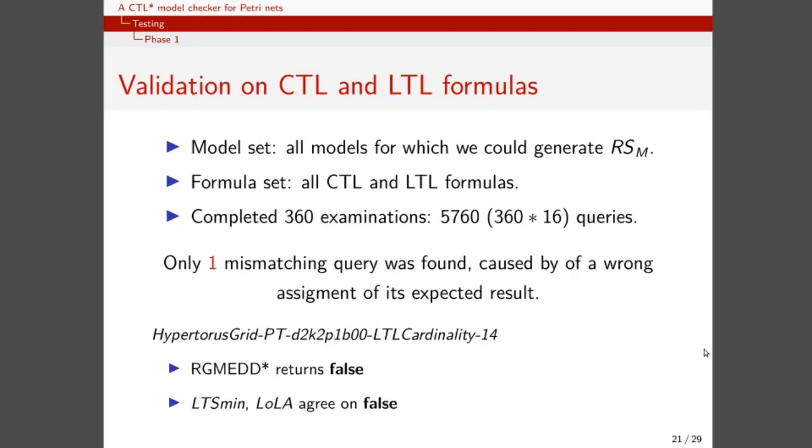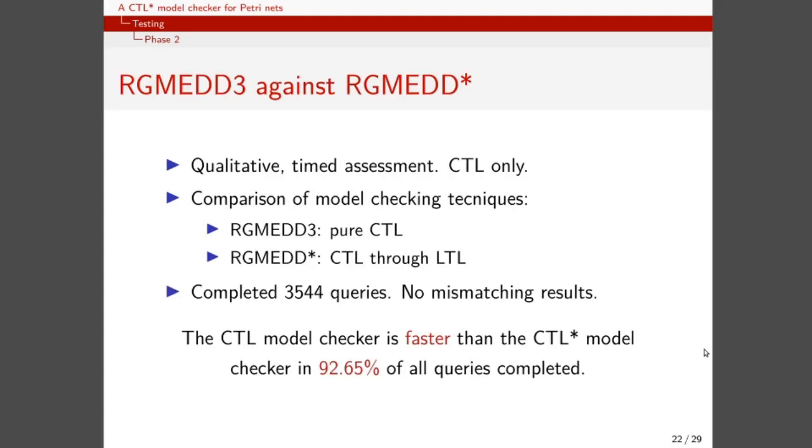Since we are satisfied with the results of the validation phase, we move on to the second testing phase, which compares the output of the previous RGMED model checker, which is a pure CTL model checker, with the current RGMED-STAR, which performs CTL through LTL model checking. Of all the queries completed we found no mismatching results, and we found the CTL model checker to be faster than the CTL-STAR one in most of the cases, and we haven't yet found an answer regarding those 8% of cases in which the CTL-STAR model checker was faster than the CTL one.